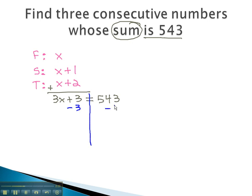Balancing through the equals sign, we subtract 3 from both sides. 3x equals 540. Dividing both sides by 3 will give me that x equals 180.